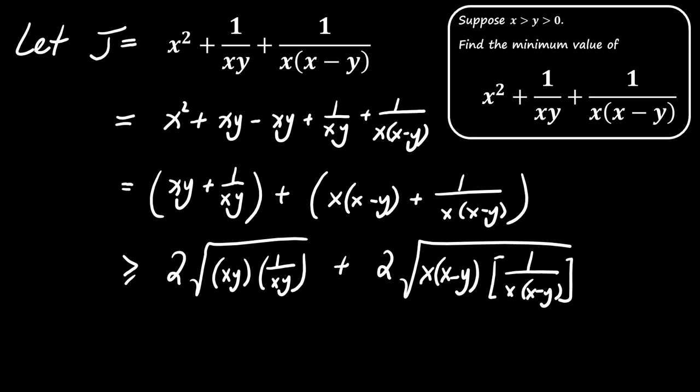Similarly, for the terms x times the quantity x minus y plus 1 divided by x times the quantity x minus y, applying AM-GM gives us a similar result. This sum is also greater than or equal to 2.